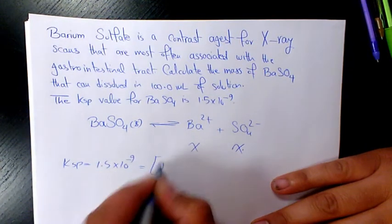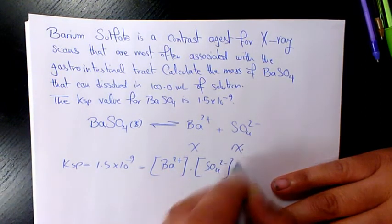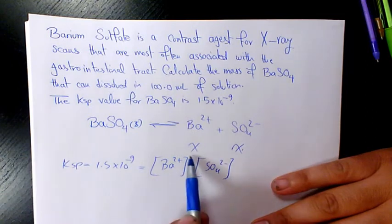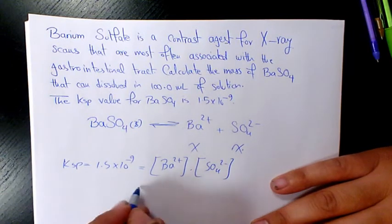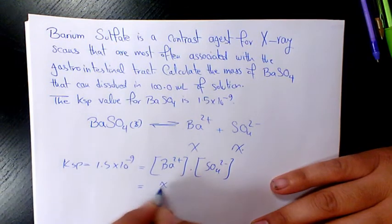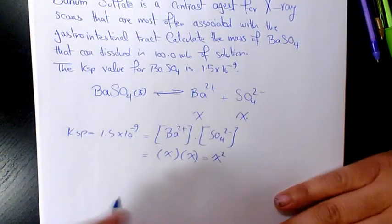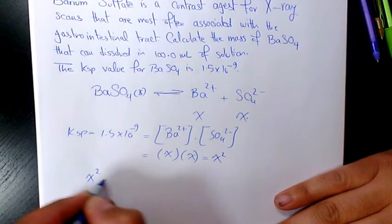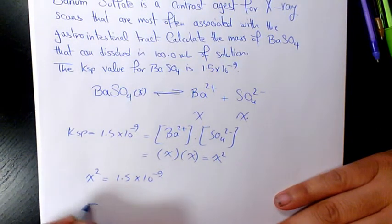This equals the barium concentration times sulfate concentration to the power of 1, to the power of 1. Why to the power 1? Because the coefficient of these two are 1. So here we have x times x, which is x squared. So x squared will be equal to 1.5 times 10 to the power of negative 9.